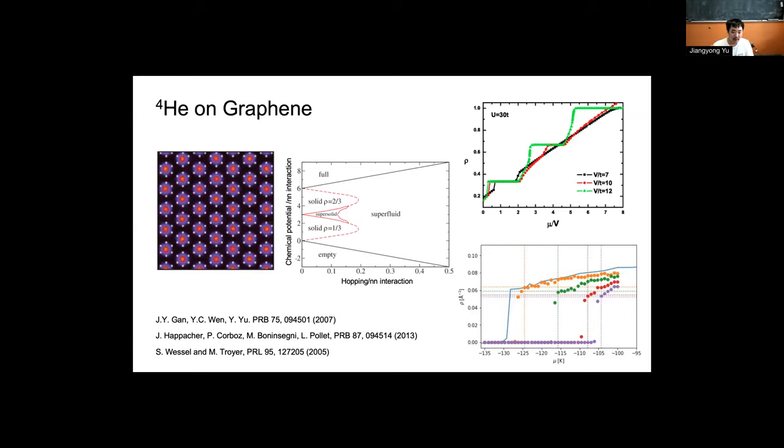Where do we see the superfluidity? We see it to the right of this one third phase. When we increase the ratio of the hopping amplitude to the nearest neighbor interaction, we could see this solid one third phase transition to a superfluid.